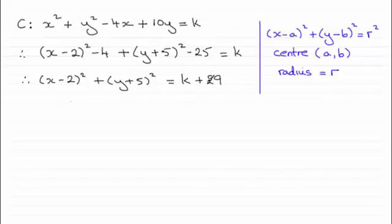And comparing this with what we see here, then you can see that a is going to be the 2, and b would correspond to minus 5. So therefore, we have a centre of the circle. Centre at 2, minus 5.